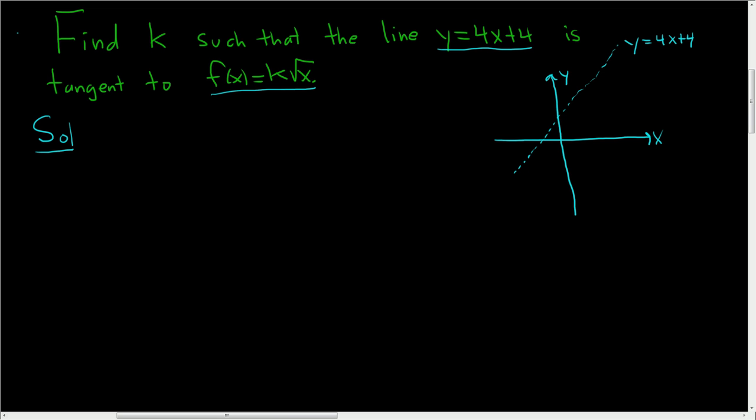And we want to find the value of k that makes this function tangent to our line. So we want k such that the square root function comes up and just touches. It's a pretty bad picture but good enough. So that it just touches the line.